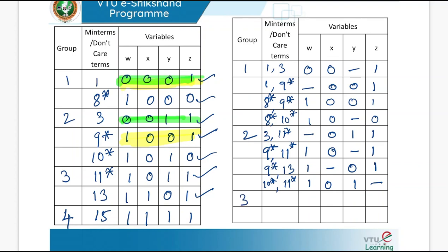Group 3: combining 11 and 15 — 11 is don't care, 15 is a main term — gives 1–11; tick mark 15. Combining 13 and 15 — both main terms — gives 11–1. Now we have combined 2-term groups.